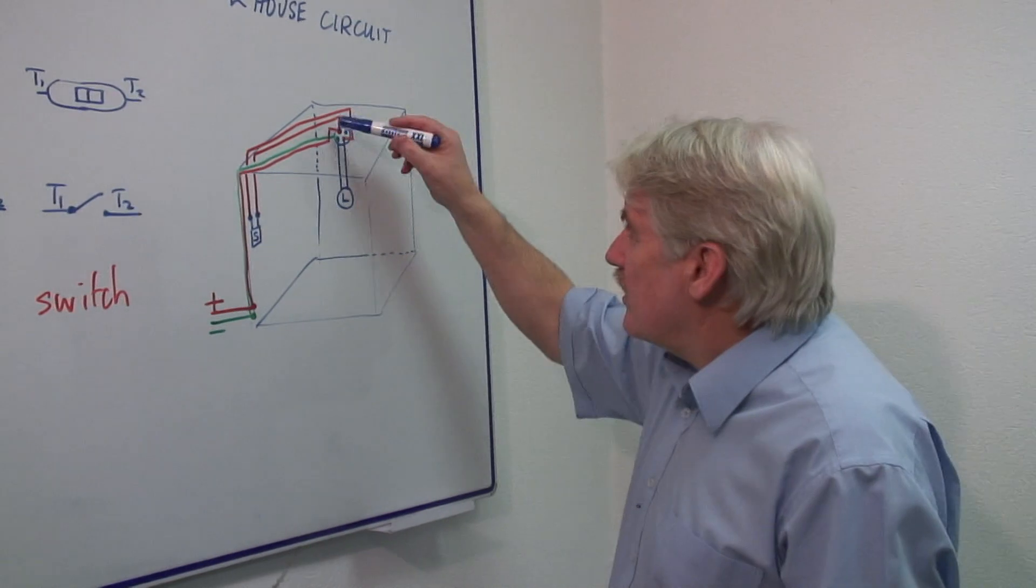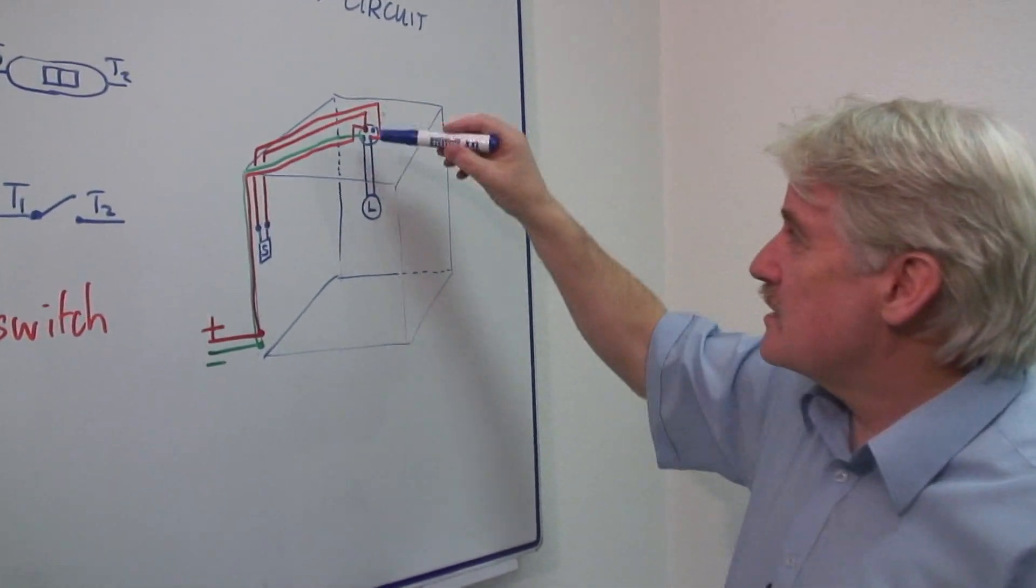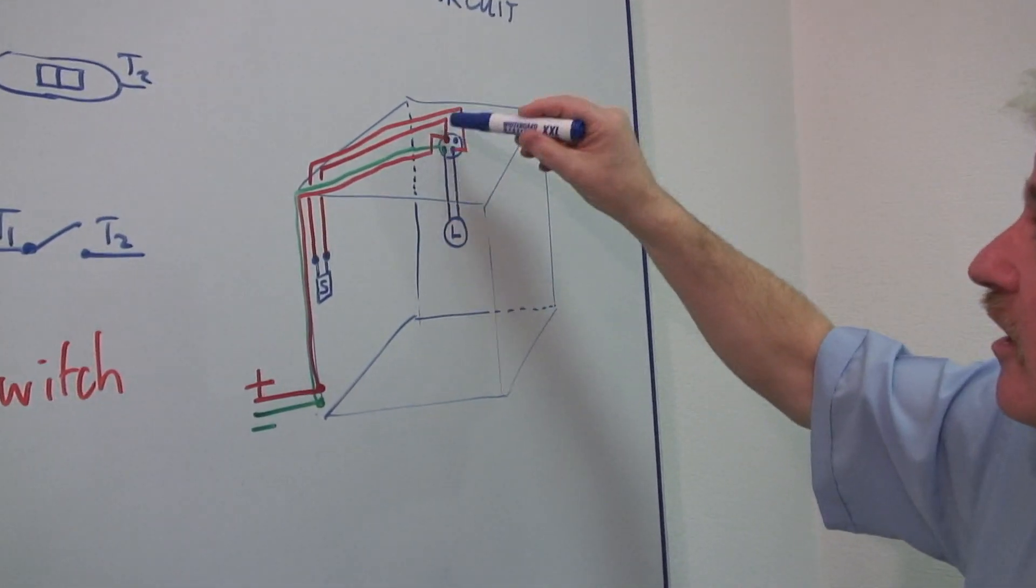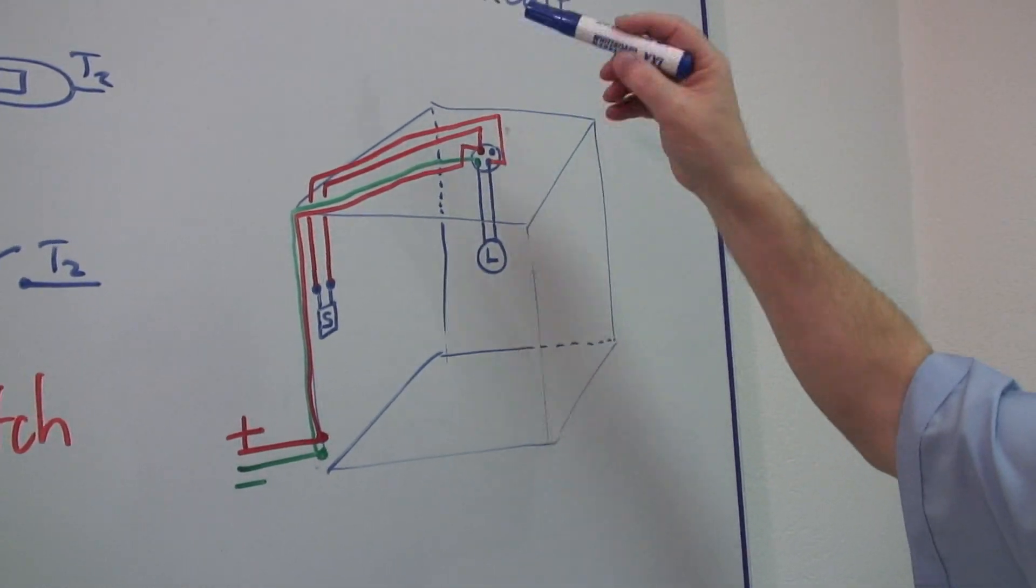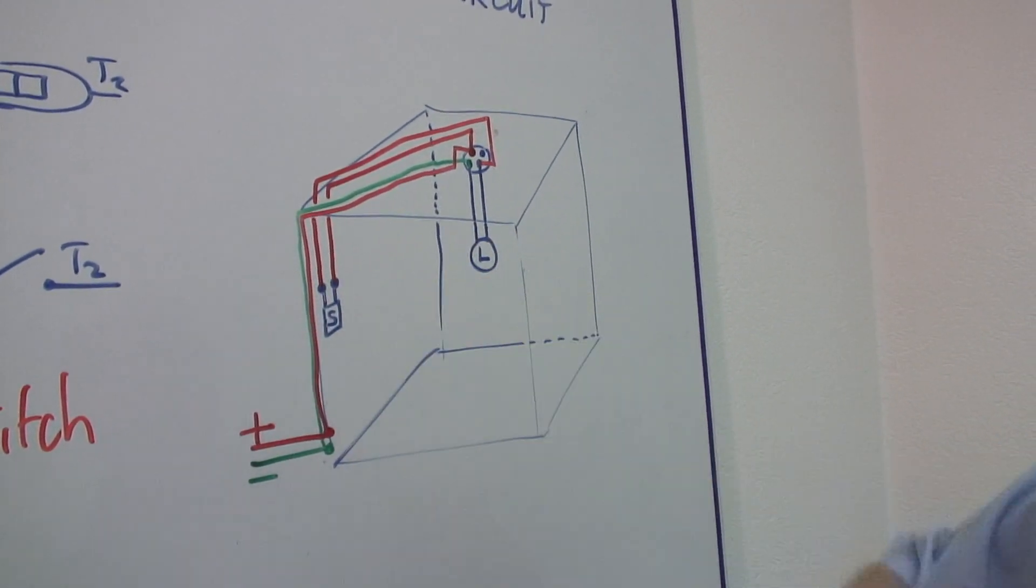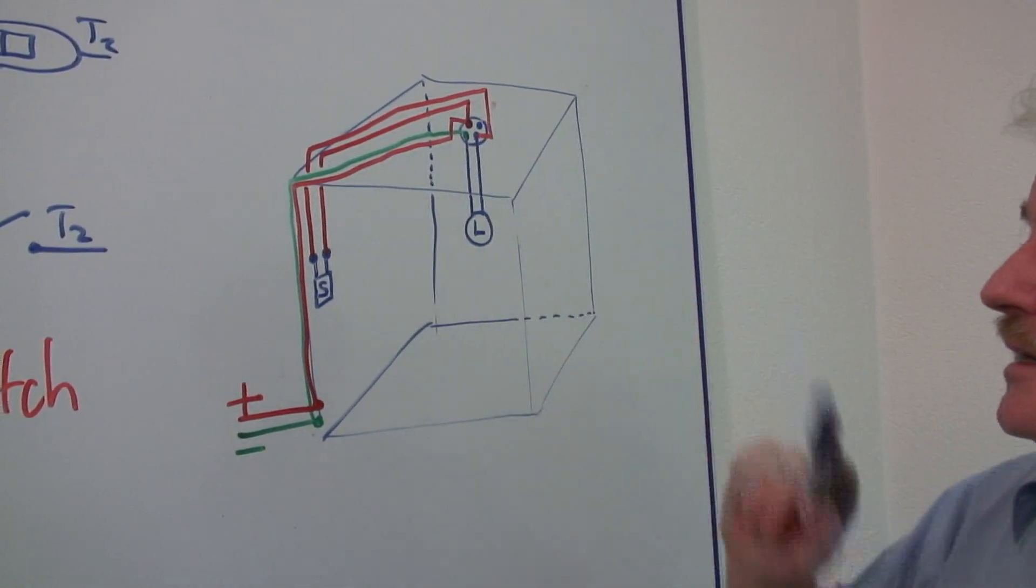Well, this part is the important part. This part in the ceiling of any room, and of course the switch on the wall. This is the complicated bit, but actually it's quite simple.